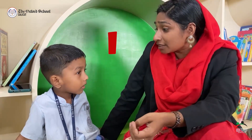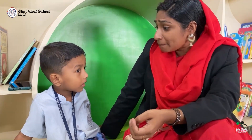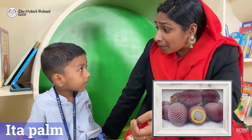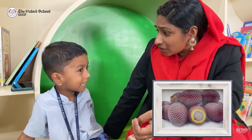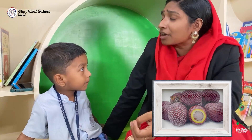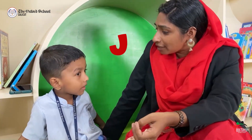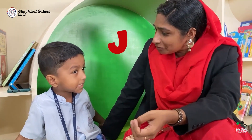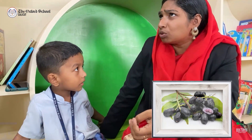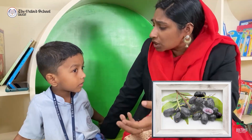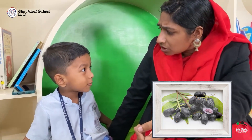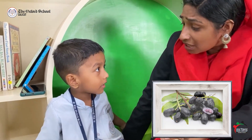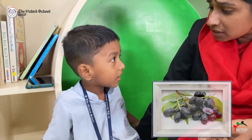Then I? Aina palm. Then J? Jamon. You know the specialty of jamon? Sour citrus fruit. It is sour? Yeah.